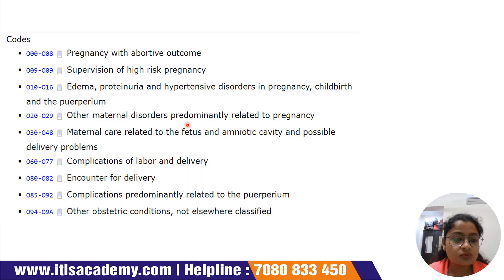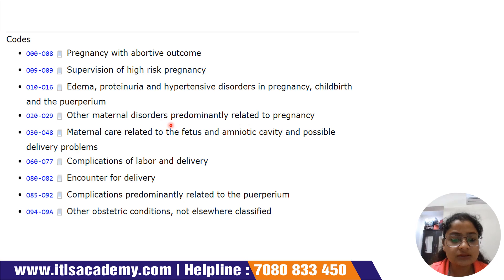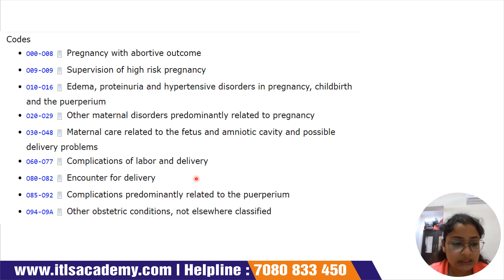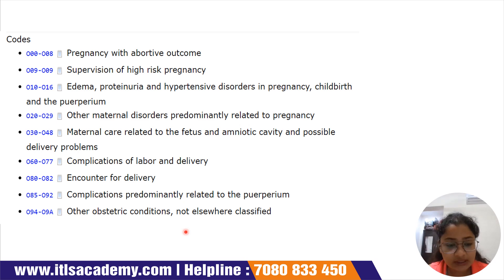Let's see the different codes and subcodes. O00 to O08 corresponds to pregnancy with abortive outcome. O09 corresponds to supervision of high-risk pregnancy. O10 to O16 corresponds to edema, proteinuria and hypertensive disorders in pregnancy, childbirth and the puerperium. O20 to O29 corresponds to other maternal disorders predominantly related to pregnancy. O30 to O48 corresponds to maternal care related to the fetus and amniotic cavity and possible delivery problems. O60 to O77 corresponds to complications of labor and delivery. O80 to O82 corresponds to encounter for delivery. O85 to O92 corresponds to complications predominantly related to the puerperium. And O94 to O9A corresponds to other obstetric conditions not elsewhere classified.